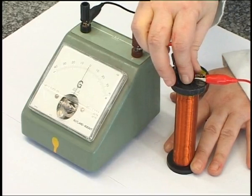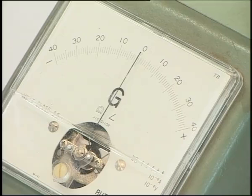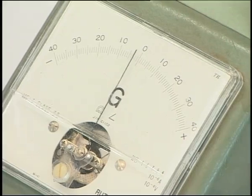When I pull the magnet out, the magnetic field between the wires changes again and the current in the wire moves the other way.